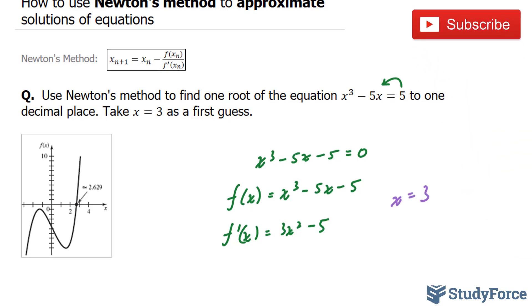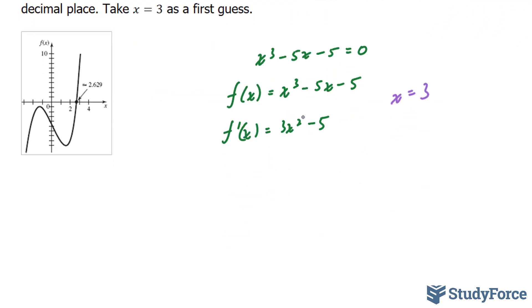Your first approximation gets substituted into both. This becomes f(3) equals 3³ which is 27 minus 15 which is 12 minus 5 equals 7. Similarly, f'(3) equals 22.